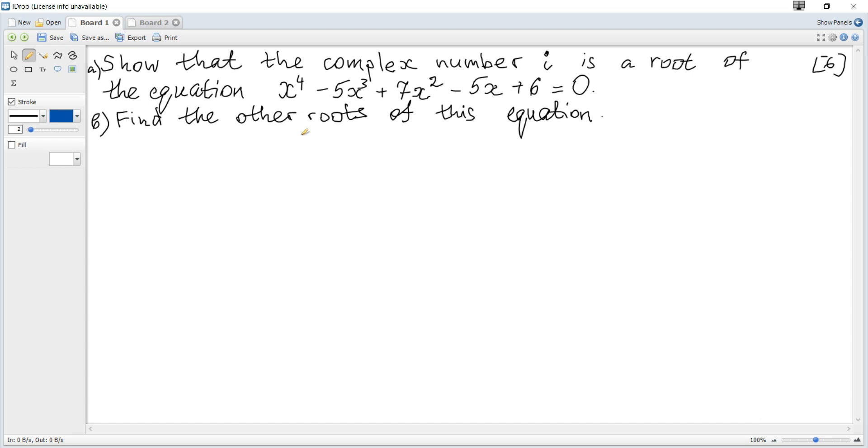To show that i is the root of the equation, we need to substitute i for x and show that it's 0. So let's consider i⁴ - 5i³ + 7i² - 5i + 6.